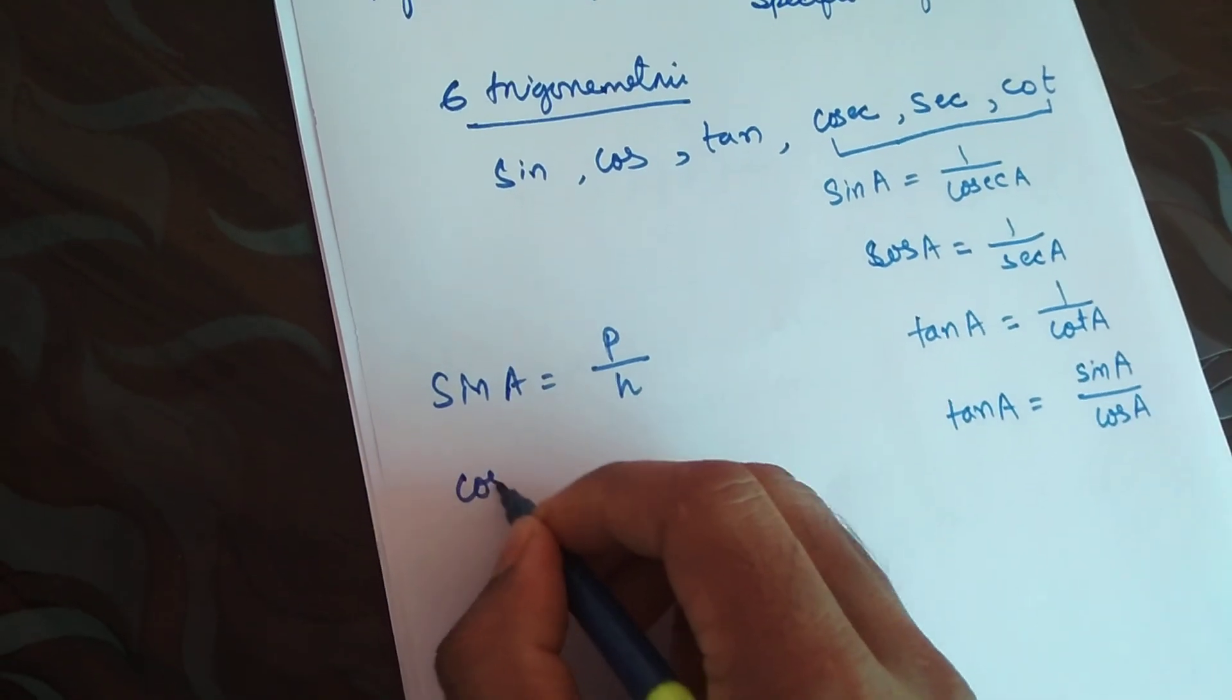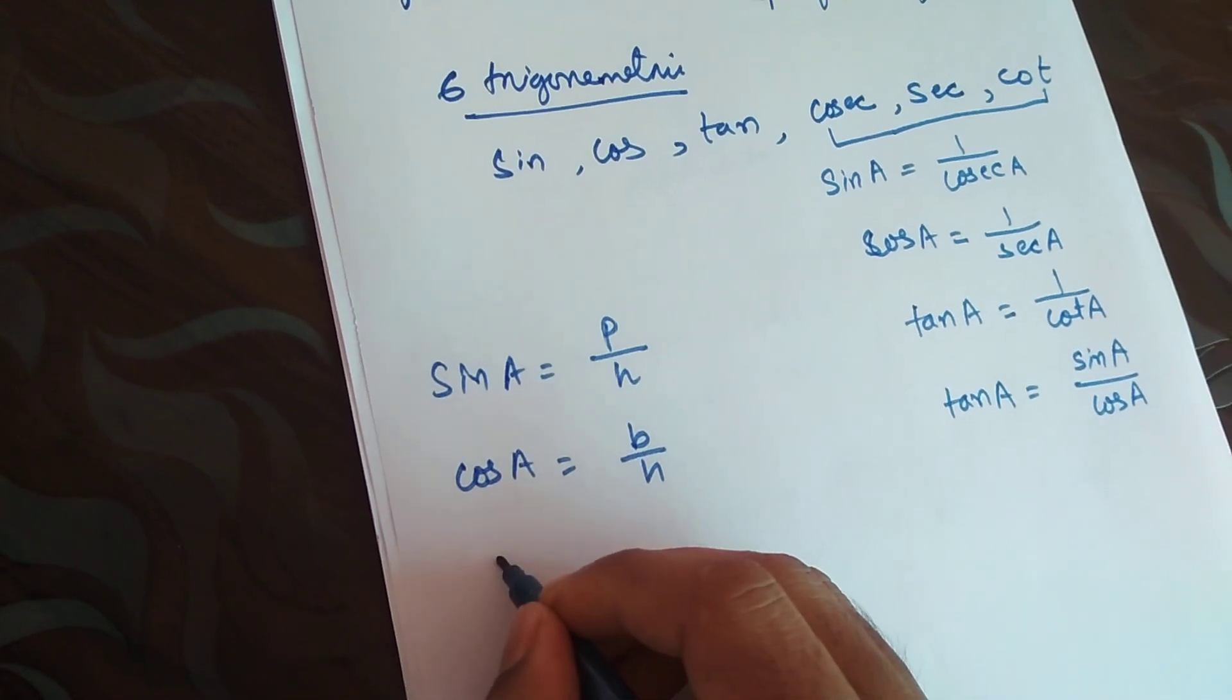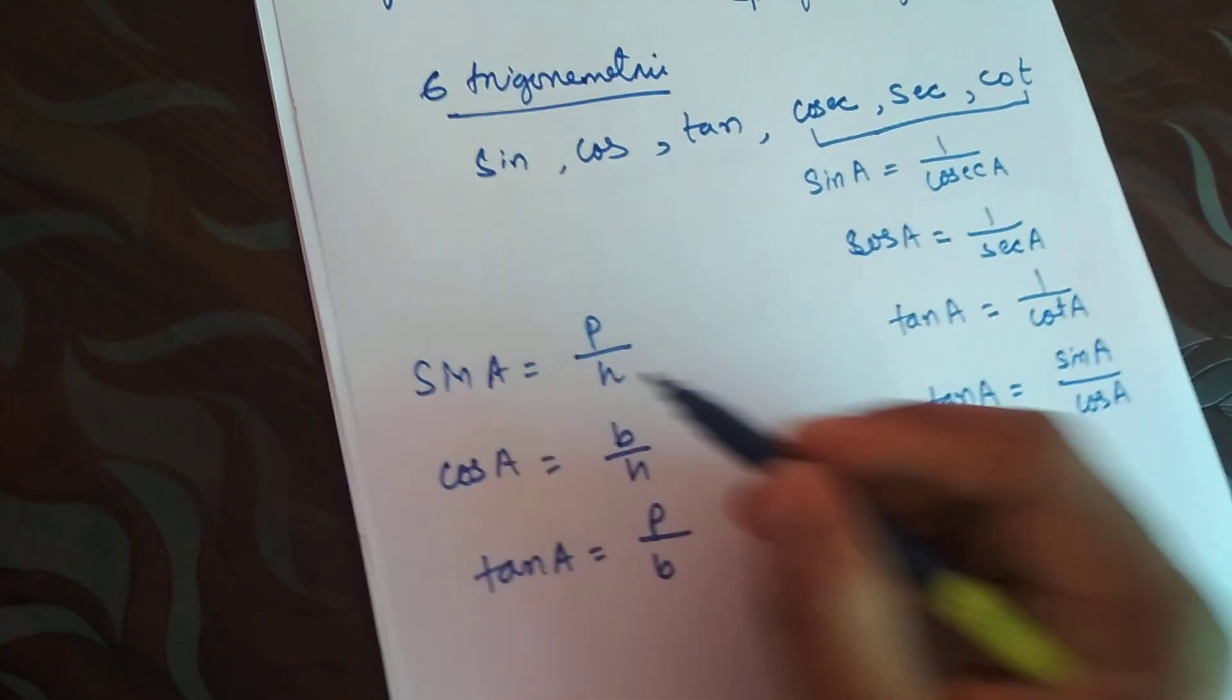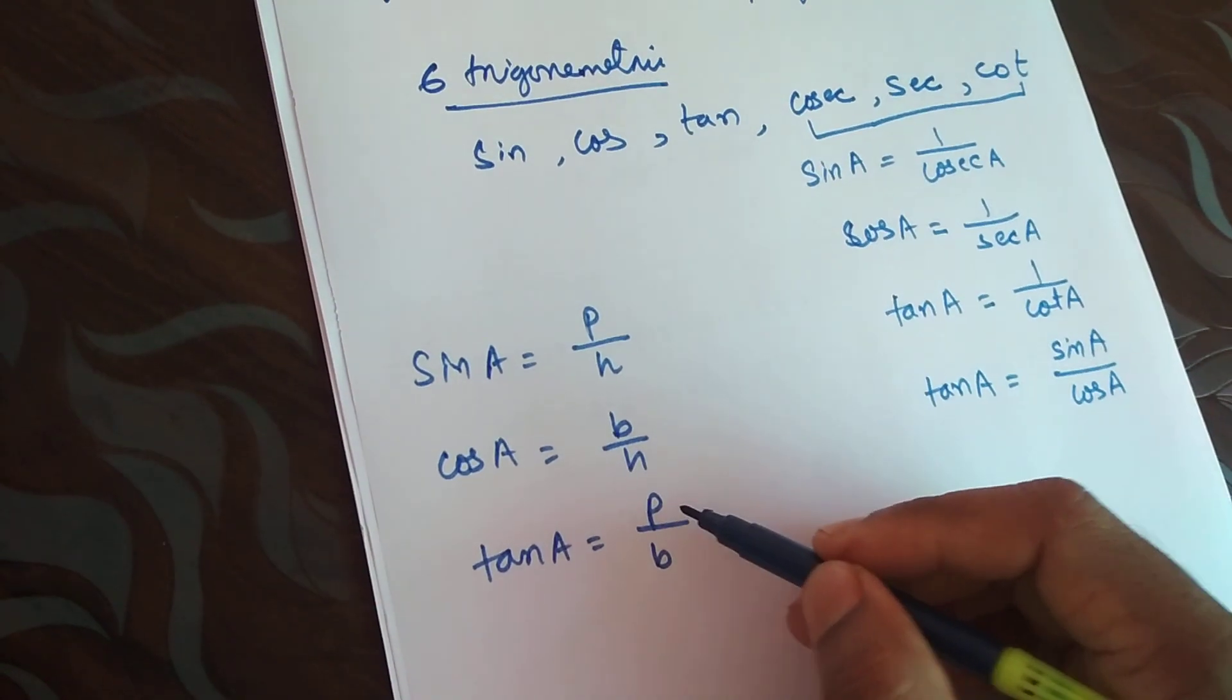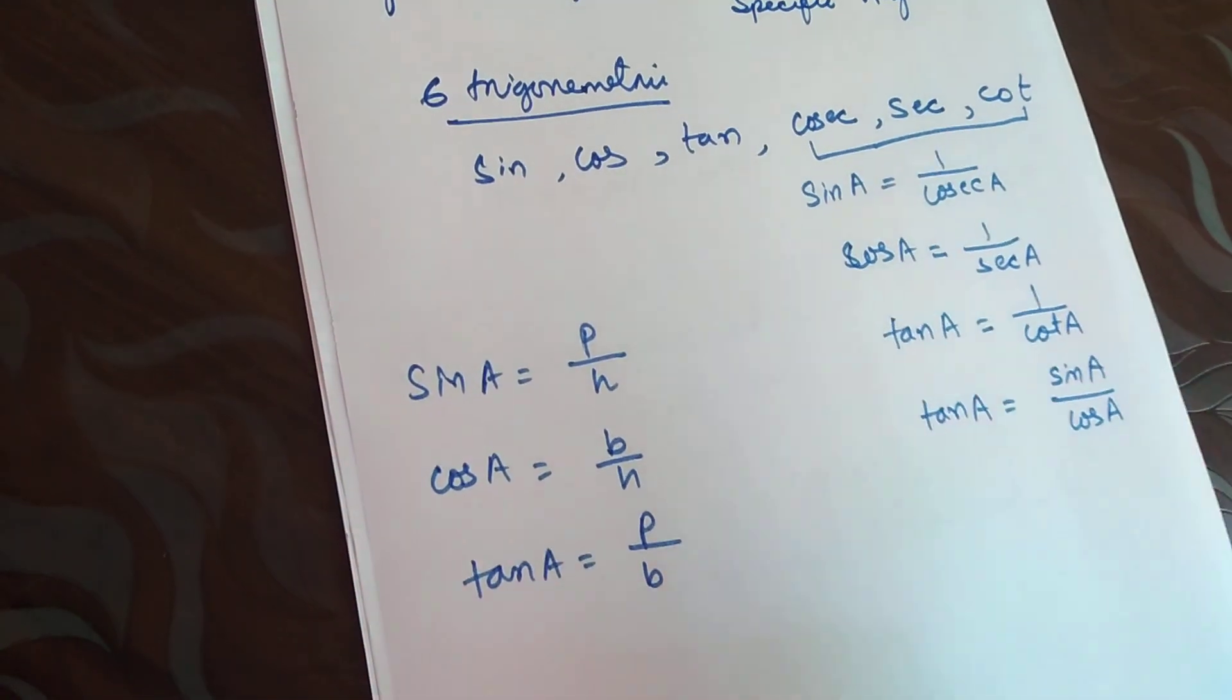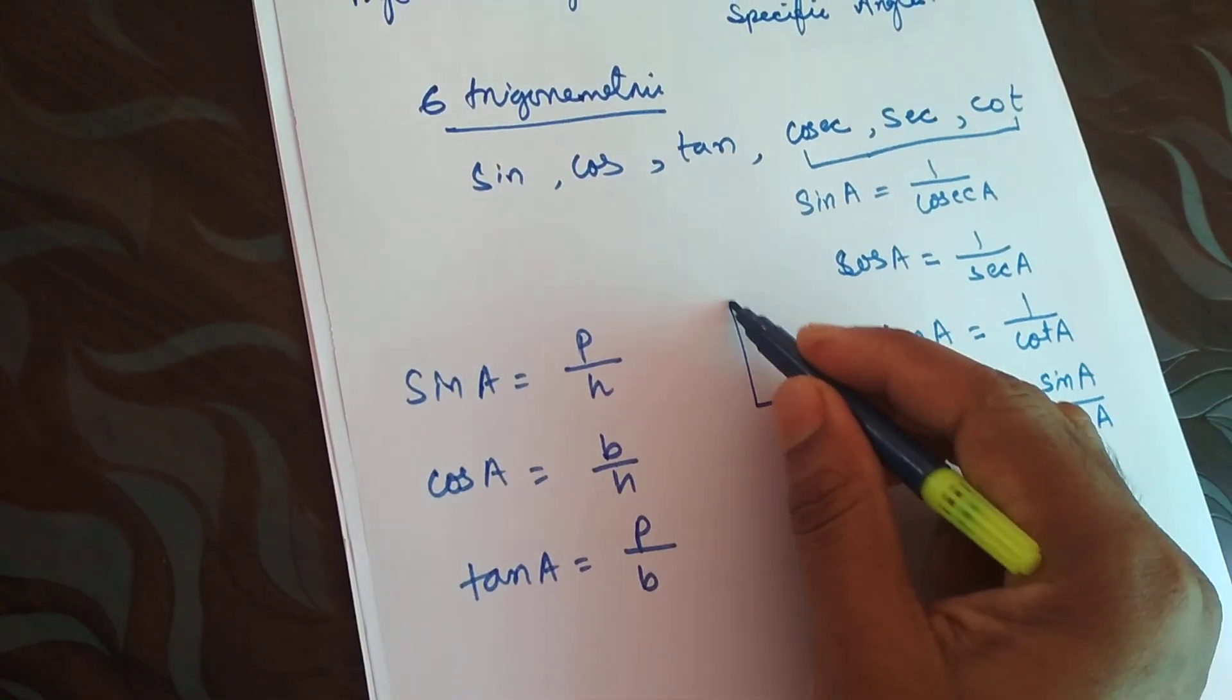Cos of A is B by H, tan is P by B. P is perpendicular, H is hypotenuse, B is base. So basically if I say sine, in order to find sine we will get the perpendicular and hypotenuse of the right angle triangle.